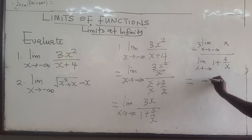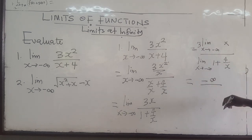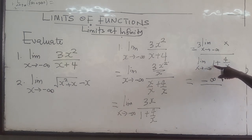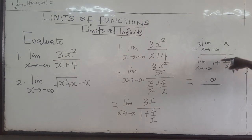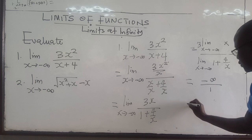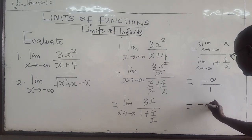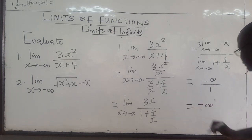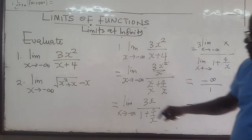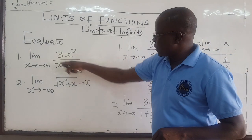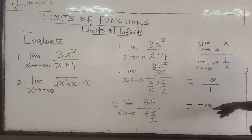Up top we have negative infinity. For the denominator, 1 is a constant so its limit is just 1, and as x approaches negative infinity, 4 over x goes to 0. So the denominator is just 1. Therefore, the limit of this expression as x goes to negative infinity will be negative infinity.